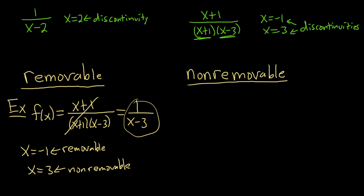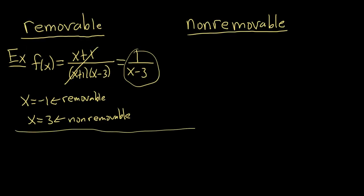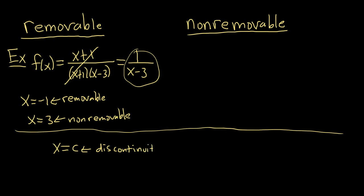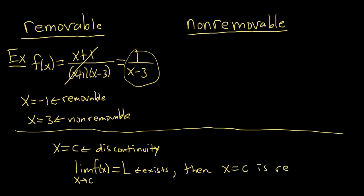So how do you find them when doing problems? Here is a criteria which always works. Let's say x equals c is a discontinuity. If we take the limit as x approaches c of f(x), and this limit exists and equals some real number L, then x equals c is removable. So if you take the limit and get a number, you can remove the discontinuity.